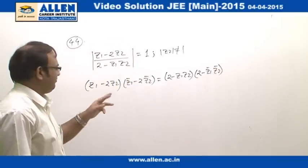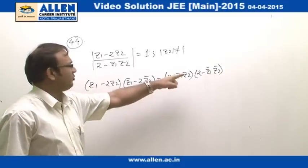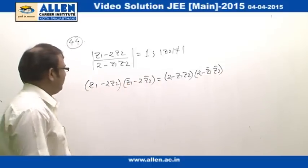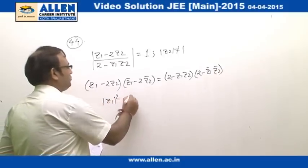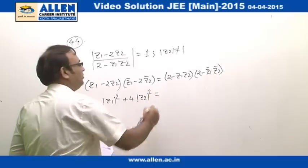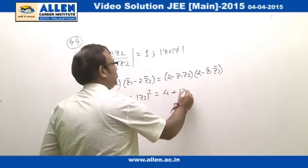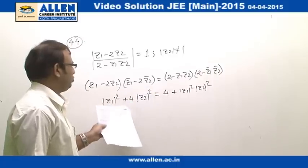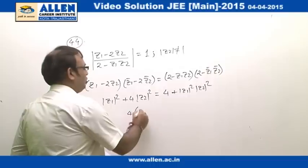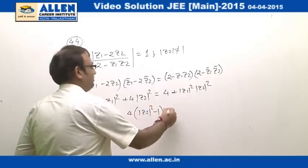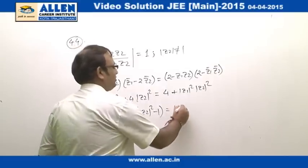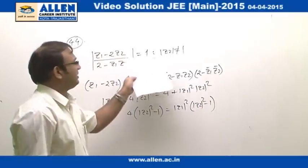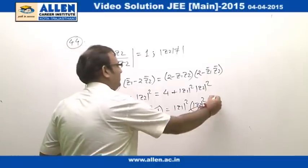Opening up the brackets, the terms −2z₁z̄₂ and −2z̄₁z₂ cancel from both sides. We are left with |z₁|²+4|z₂|² = 4+|z₁|²|z₂|². Collecting terms, 4(|z₂|²−1) = |z₁|²(|z₂|²−1). Since |z₂|≠1, we can cancel (|z₂|²−1) from both sides.